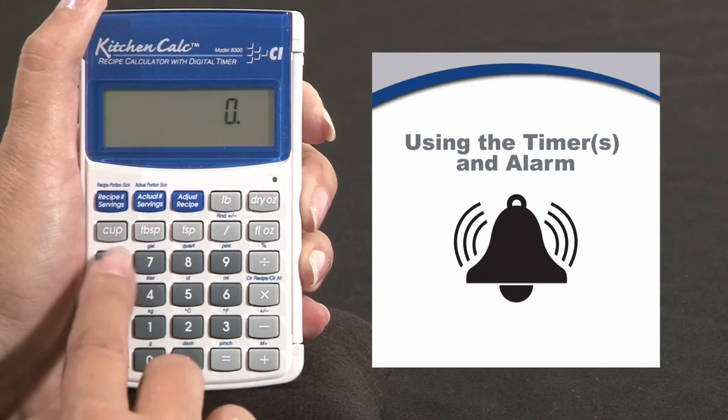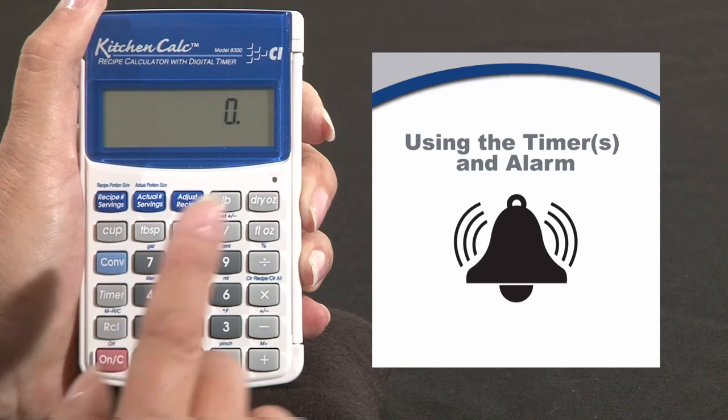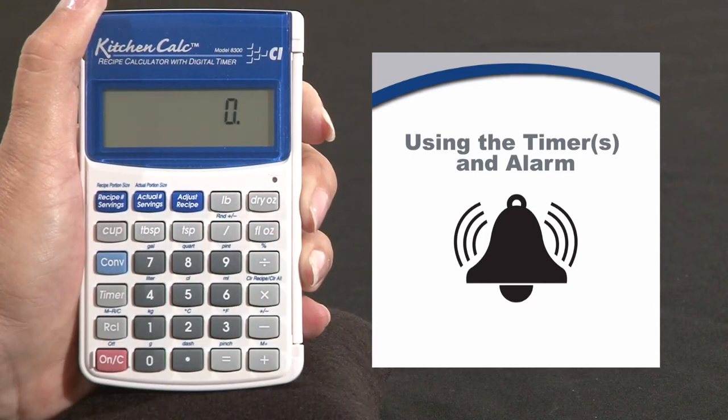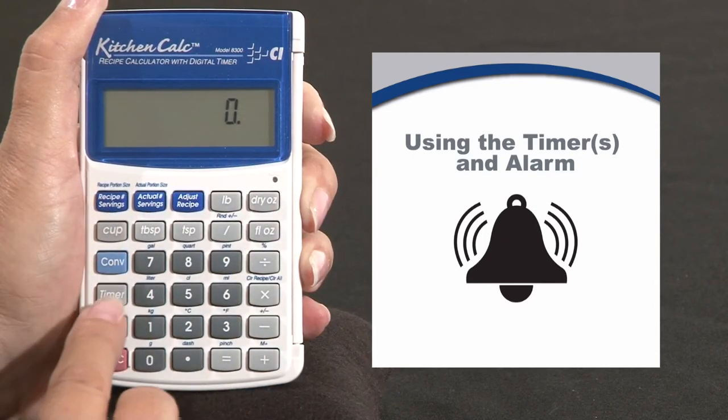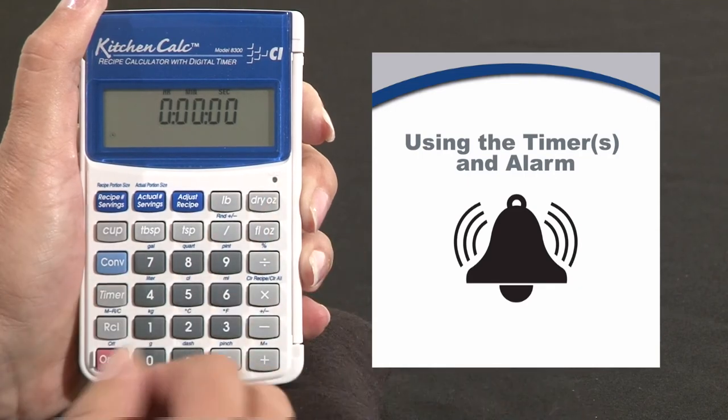If you had wanted, you could have set your timer for the item that was in the oven and then you could have gone on calculating your recipe. Then all you'd have to do was push timer again and it would have reappeared.